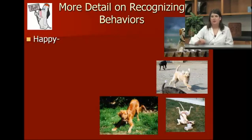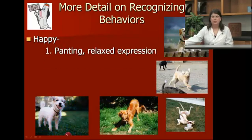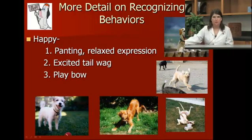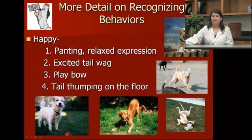A happy dog: some ways you can see if a dog is happy is if they have a panting, relaxed expression, an excited tail wag, if they're doing a play bow — which is where they put their front feet on the ground and kind of lift their hind in the air and wiggle at you — or tail thumping on the floor.